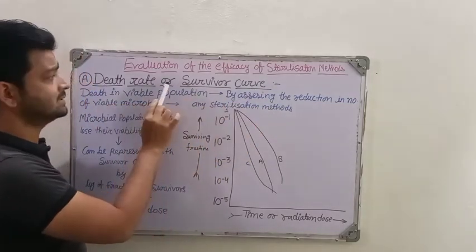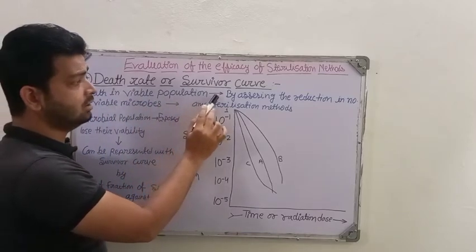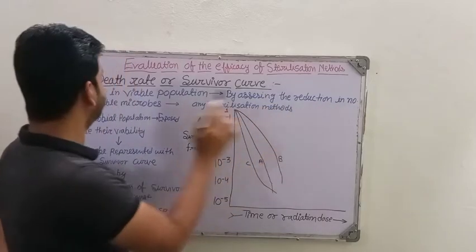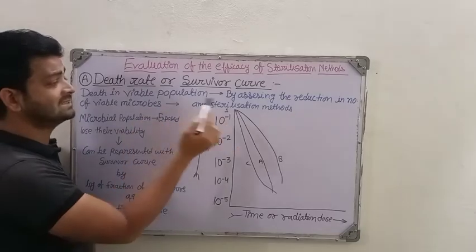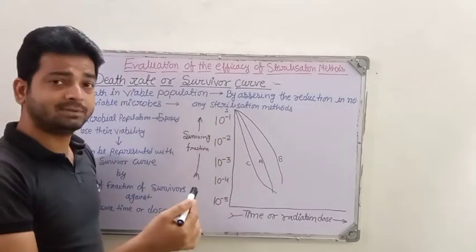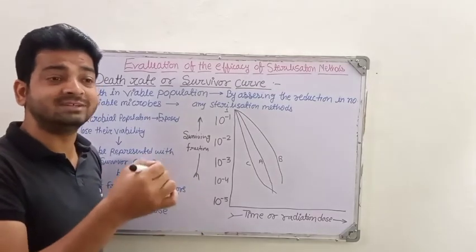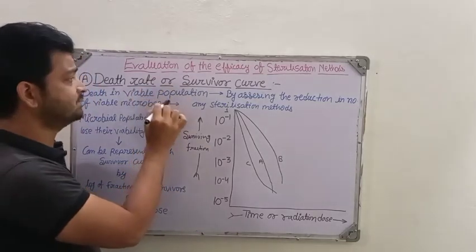The first one is the death rate. We assess death in viable population by measuring the reduction in the number of viable microbes. Of any sterilization method - wet heat sterilization, dry heat sterilization, whatever sterilization method we have used - what is the death rate? What is the rate of dying of the microorganisms? That we determine by this method.